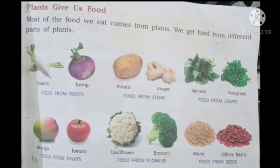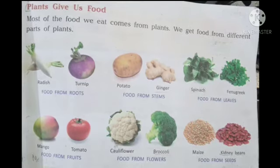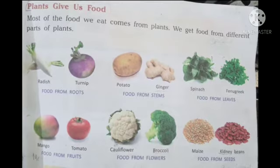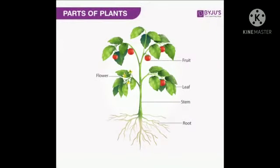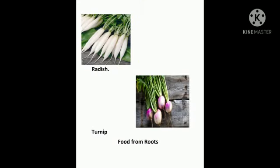We get food from different parts of plants. Look at the next one — here are some pictures of parts of plants and some foods that come from these parts of plants. These are the parts of plants: the first one is fruit, leaf, stem, root, and flower. Now let's see which foods come from these parts of plants.